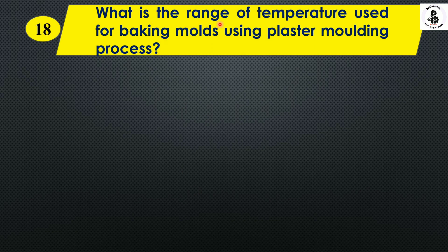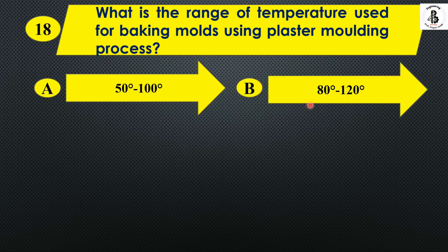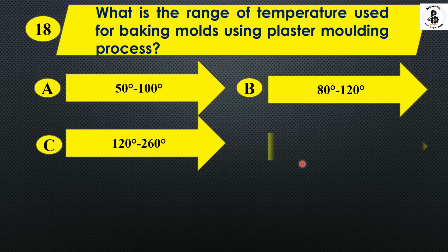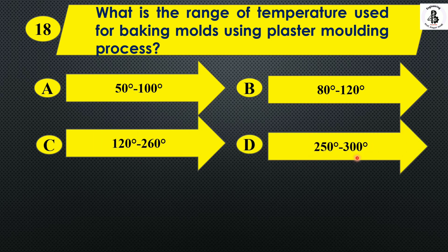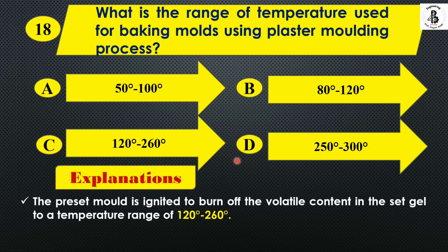Question 16: What is the temperature range used for baking molds using the plaster molding process? Option A: 50°C to 100°C. Option B: 80°C to 120°C. Option C: 120°C to 260°C. Option D: 250°C to 300°C. The range of 120°C to 260°C is most preferable for baking molds using the plaster molding process. So the right answer is Option C.